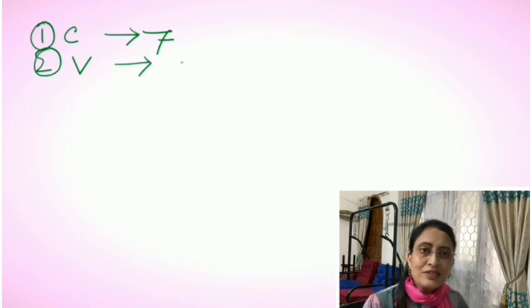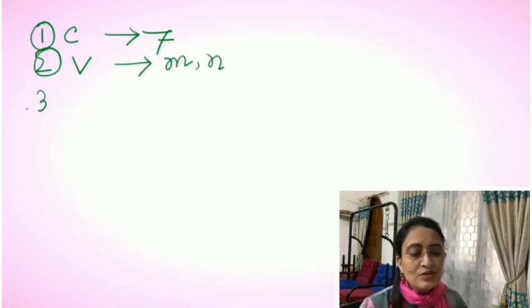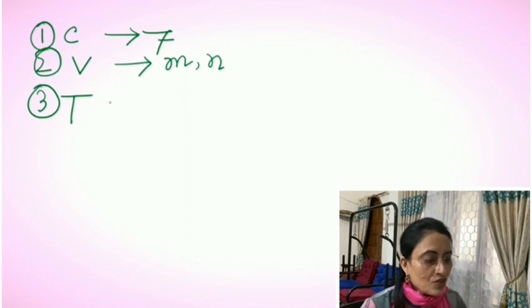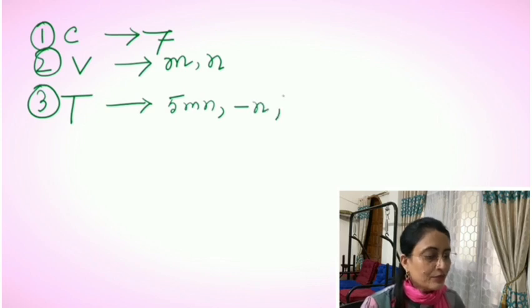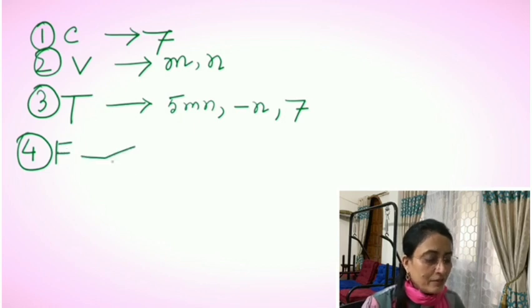So children, here's the summary. Number one: constant, which is 7 in this expression. Number two: variable—m and n are the variables for the first term, and n is for the second term. Number three: 5mn, minus n, and 7—these are three terms.